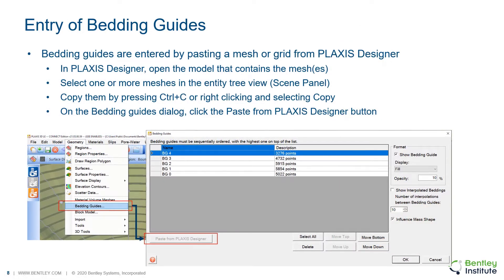How can we enter the bedding guides in Plexis 3D LE? We need to enter the bedding guides by pasting the mesh or grid from Plexis Designer. In Plexis Designer, we open the model that contains the meshes representing the bedding guides, select the ones we'd like to include in the slope stability analysis from the tree view, and then copy them using Ctrl-C or by right-clicking and selecting copy. When opening Plexis 3D LE, the user can access the bedding guides dialog on the geometry menu and paste the surfaces by selecting the button 'Paste from Plexis Designer.' When including the surfaces, they will have the same name from Plexis Designer.